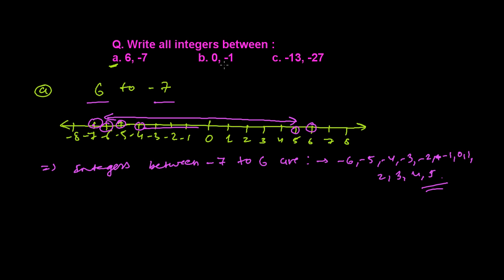Now between 0 and minus 1, there are no integers at all. There are no integers between 0 and minus 1.